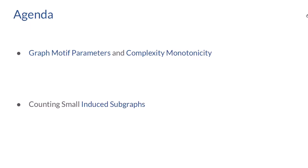Instead of immediately presenting our research about counting small induced subgraphs, I will start with a rough introduction to what is called the framework of graph motif parameters and complexity monotonicity. This paradigm is by now one of the most important tools to classify the complexity of problems that require counting small structures in large networks.